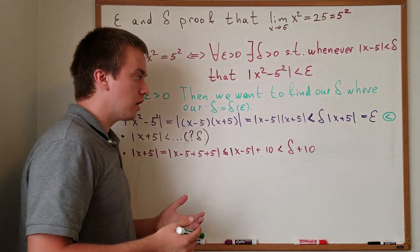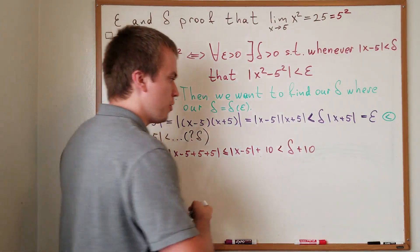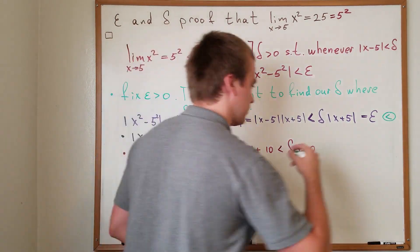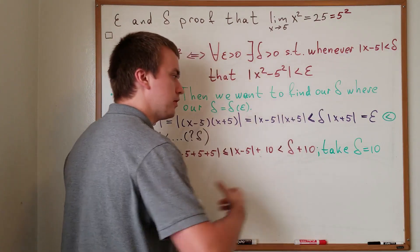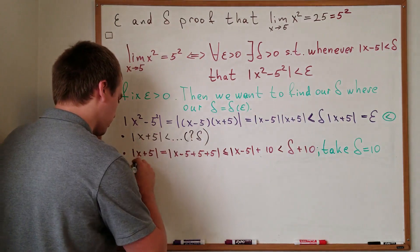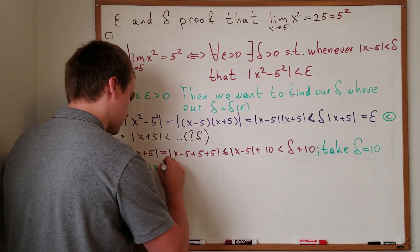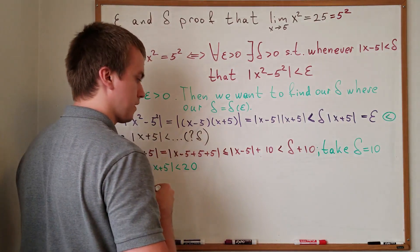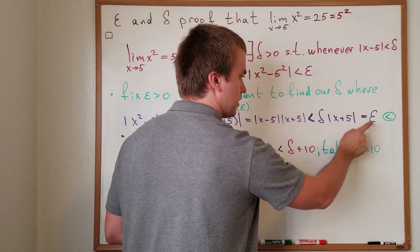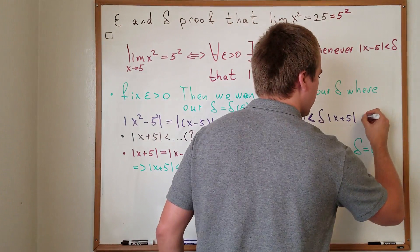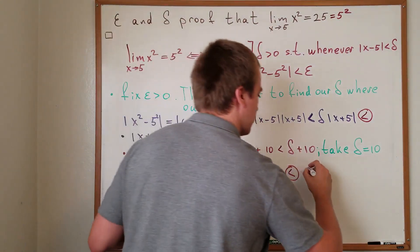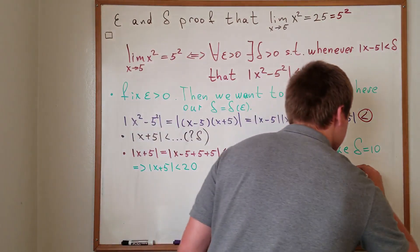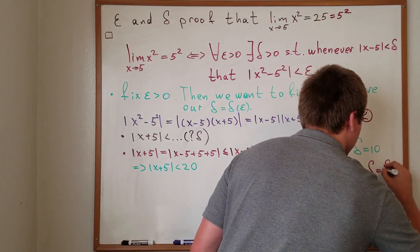Because this is math and we have freedom of choice, we can restrict to a particular delta. Let's take delta less than or equal to 10. Then from the bound we found, the absolute value of x plus five is less than 10 plus 10, which is less than 20. Coming back to our inequality, we then get delta times 20 equals epsilon, which gives us delta equals epsilon over 20.